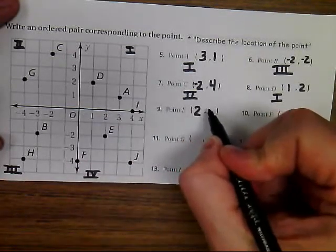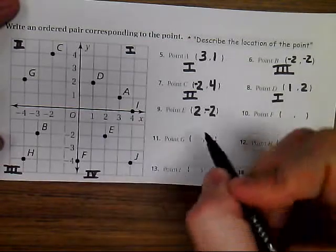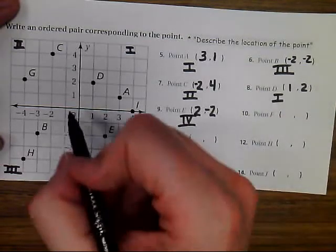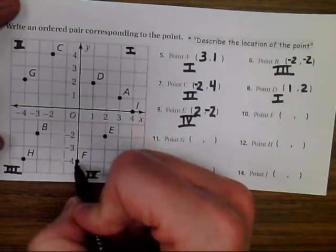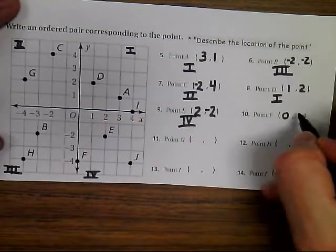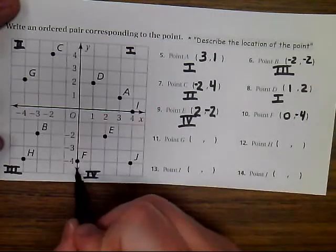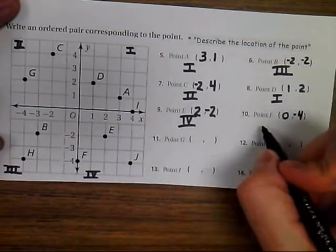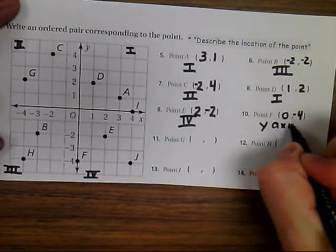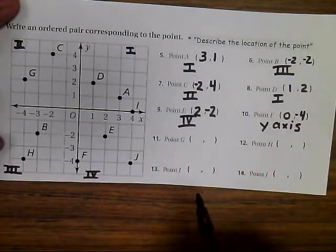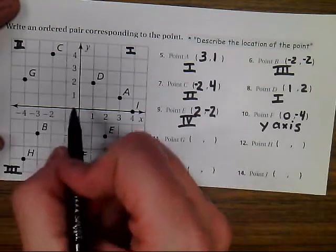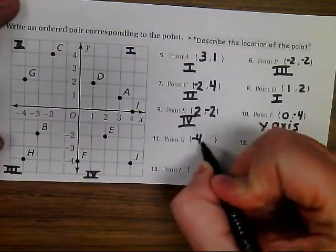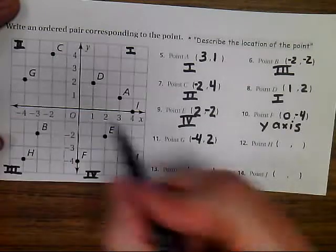Point E, I'm going to go over two and then down two, so that's positive and a negative, and that's in quadrant four. Point F is going to be over nothing and then down four, so that's a zero comma negative four. Notice that's not in a quadrant, the letter's in the quadrant but the point is not. This is actually on the y-axis. As I move on to point G, you can see that I'm going to the left four units and up two, that's negative four comma two, and that is in quadrant two.